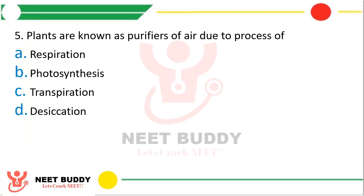Question 5. Plants are known as purifiers of air due to the process of — option A: Respiration, option B: Photosynthesis, option C: Transpiration, or option D: Desiccation? The correct answer is option B, photosynthesis.